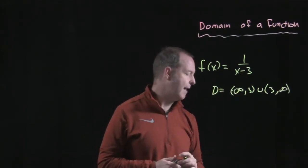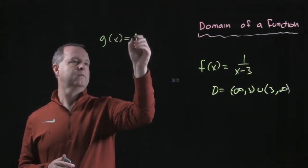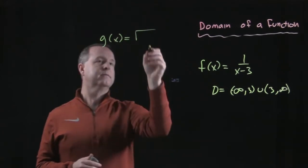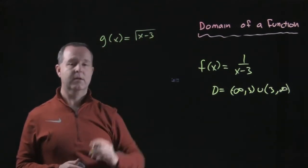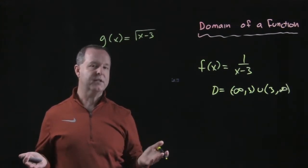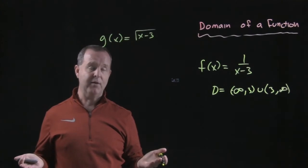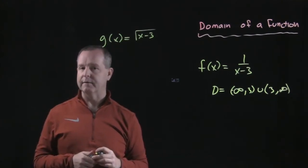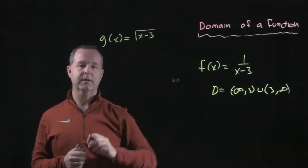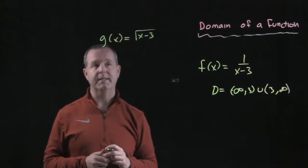Likewise, we could have another function that looks like a square root function of x minus 3. Well, we understand that on an even root, we cannot have values that make that root negative. So for what values is this particular function not defined? What's its domain?